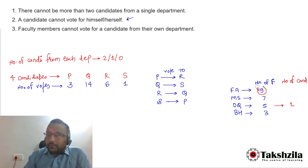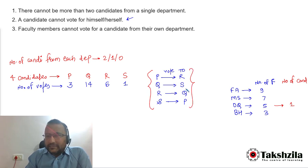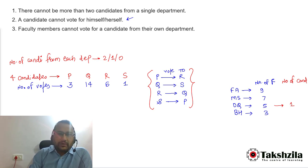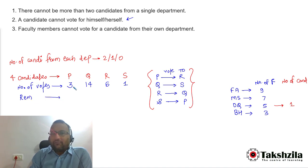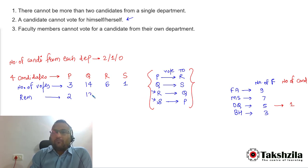We know that P voted for R, Q voted for S, R voted for Q, and S voted for P — so we account for one vote each from the candidates themselves. P got 3 votes total; one came from S, so 2 remaining votes need to be identified. Q got 14 votes; one came from R, so 13 remaining votes need to be identified. R got 6 votes; one came from P. S got 1 vote, which came from Q.